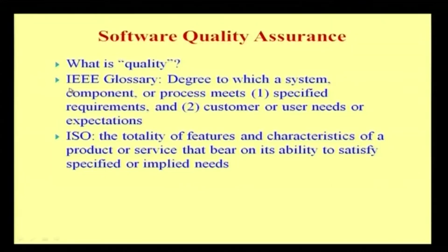To understand the exact meaning of quality, let us define what quality means. By a standard IEEE glossary, quality is defined in terms of the degree to which a system, a component, or a process meets specified requirements and customer or user needs or expectations. As we have already understood, as part of acceptance testing, whatever the end user has posted as a requirement, those specifications are to be initially met. During the process of development, as a process, system, or component, everything should be maintained or developed in terms of quality.